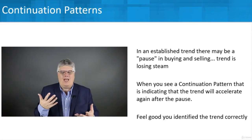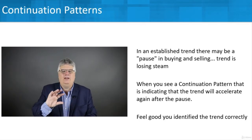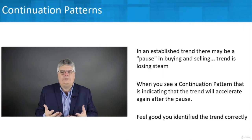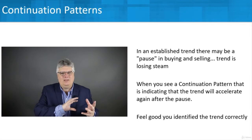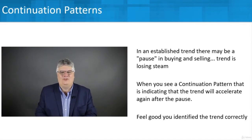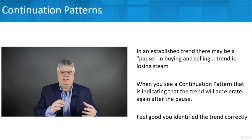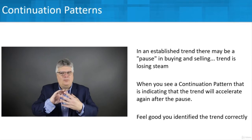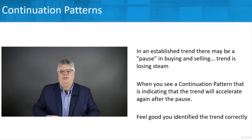In an established trend — let's say an uptrend — prices are headed in a certain direction. What can happen is there's a pause: a little slowing down of buying and selling. The trend is starting to lose its steam; it's not being firmly bought up or firmly sold off. When you see a continuation pattern, that indicates the trend will accelerate again after the pause. So in an uptrend, prices kind of stabilize or go sideways, maybe down a little bit, and then with a continuation pattern they would keep going up.